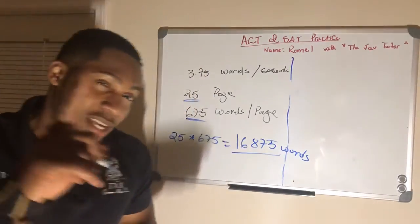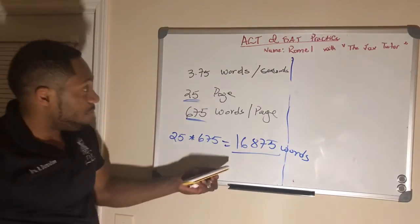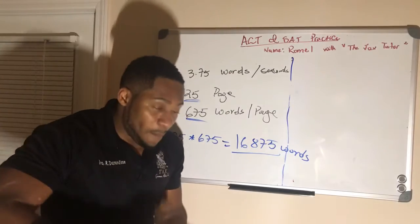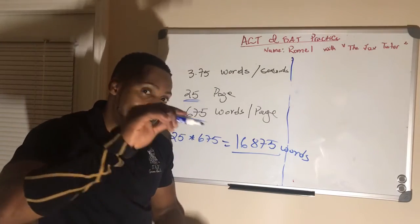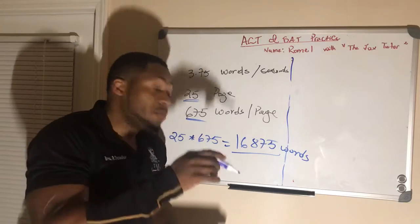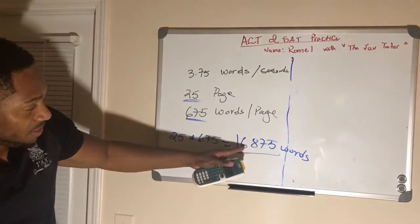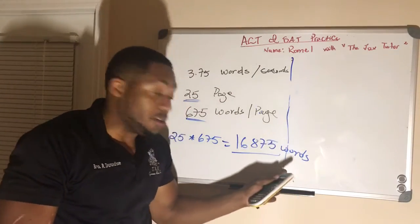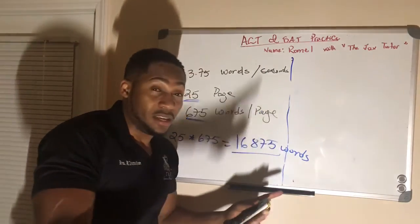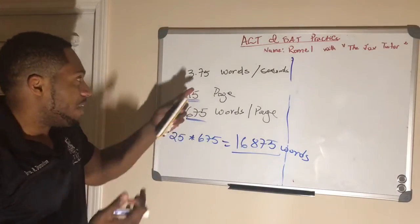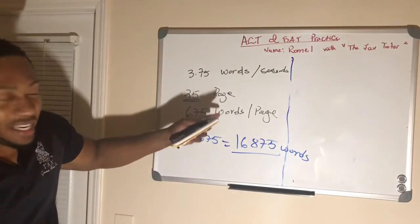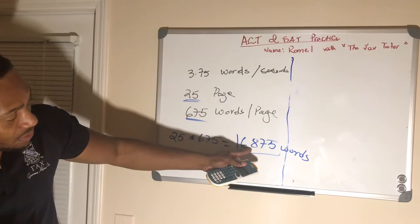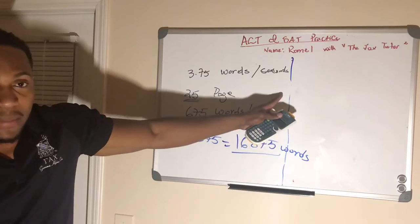25 times 675 is equal to — you can do this in your calculator too — 16,875 words that he has to type. But what they tell us is he types, on average, 3.75 words per second. That means every second that passes, that is 3.75 words. If he only had to type 3.75 words, it would take him one second. If he had to type just about seven words, it would take him about two seconds. That's what this is telling us. But he has to type 16,875 words.